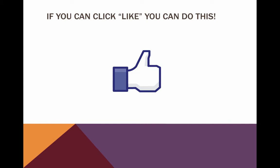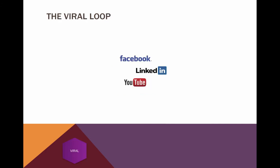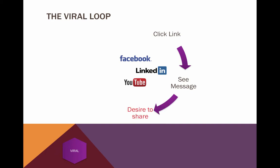Hopefully I can educate you on some ideas and expand your mind to some thinking on how this works. The viral loop is a process and a method used by companies like Facebook, LinkedIn, and YouTube. The viral loop is the process of clicking a link on the internet, seeing a message that comes through on that link, then having a desire to re-share that, and then sharing that link. The person that you shared it with sees the link, clicks on it, sees the message, has a desire to share — and that process goes over and over again. That really is what the concept of viral marketing is on the internet.